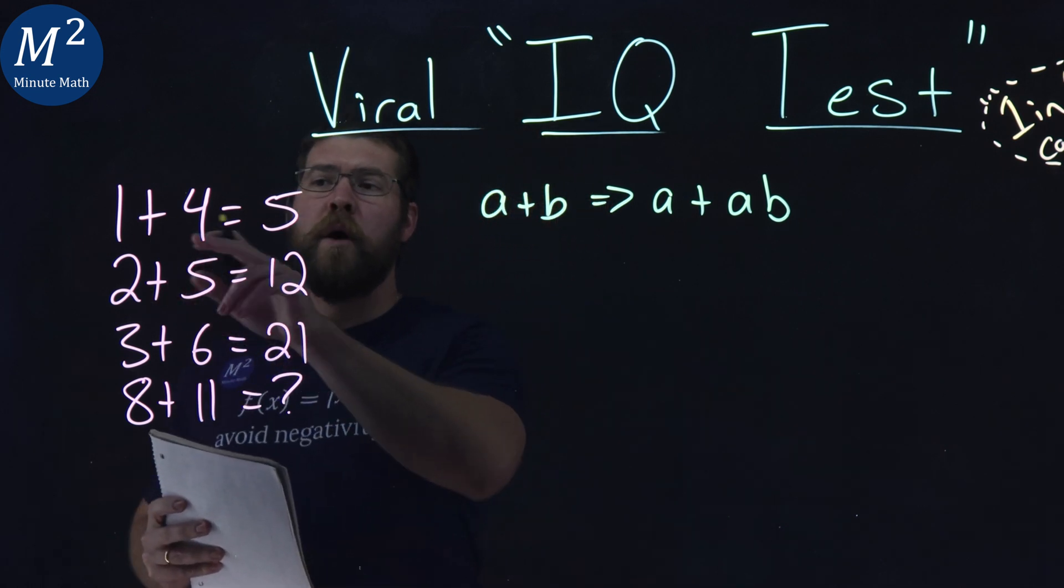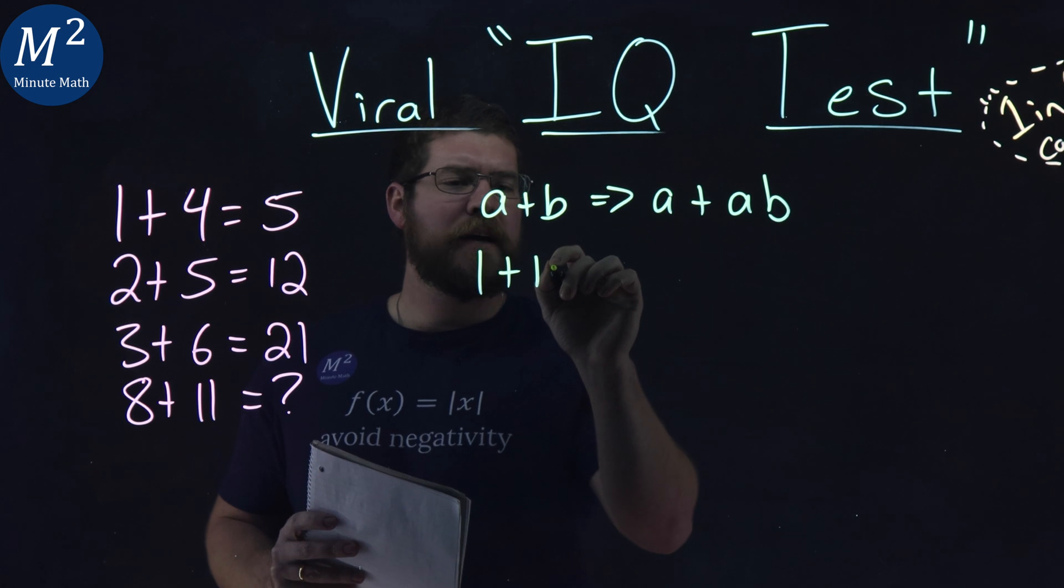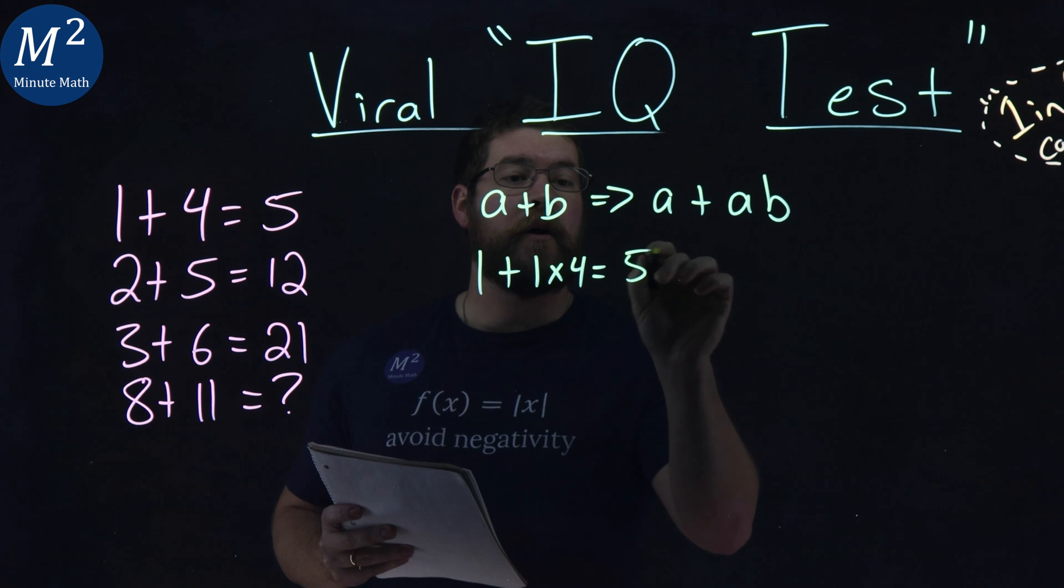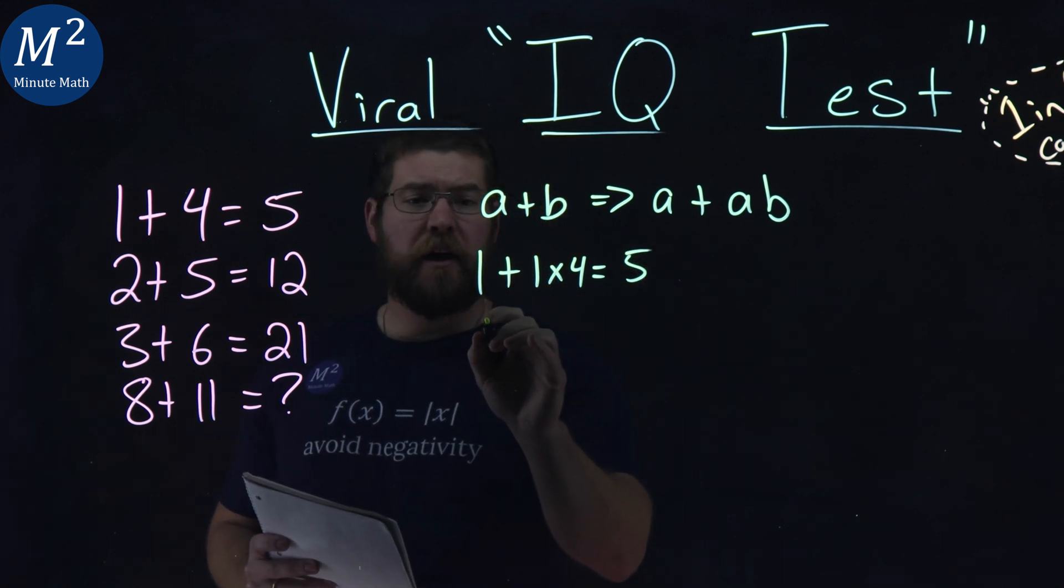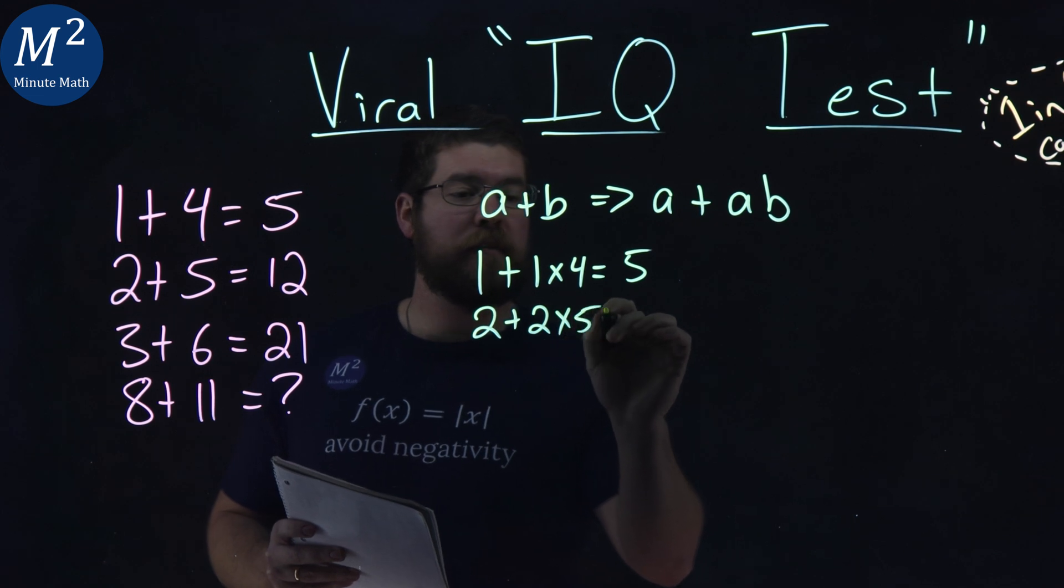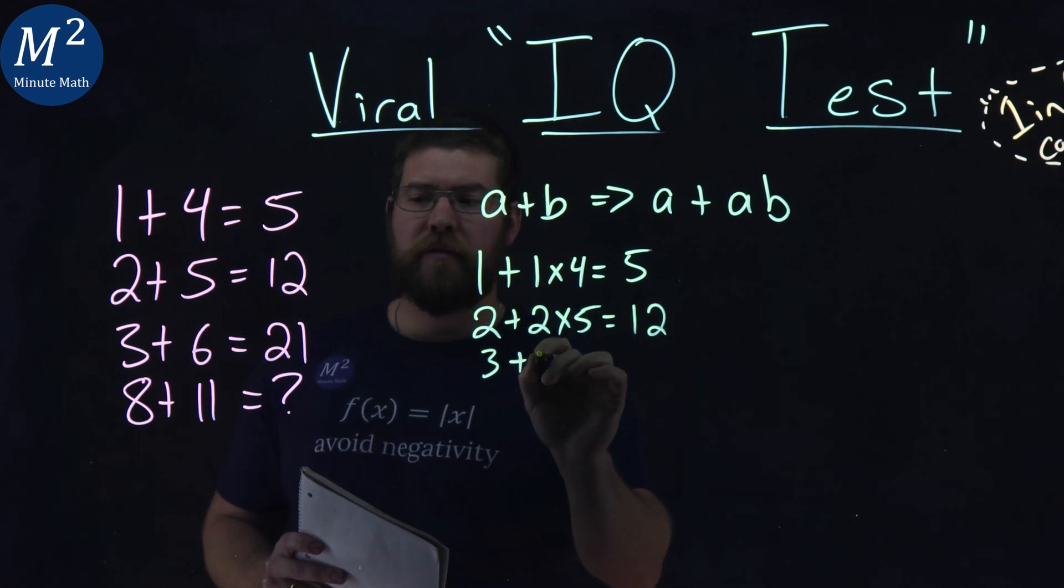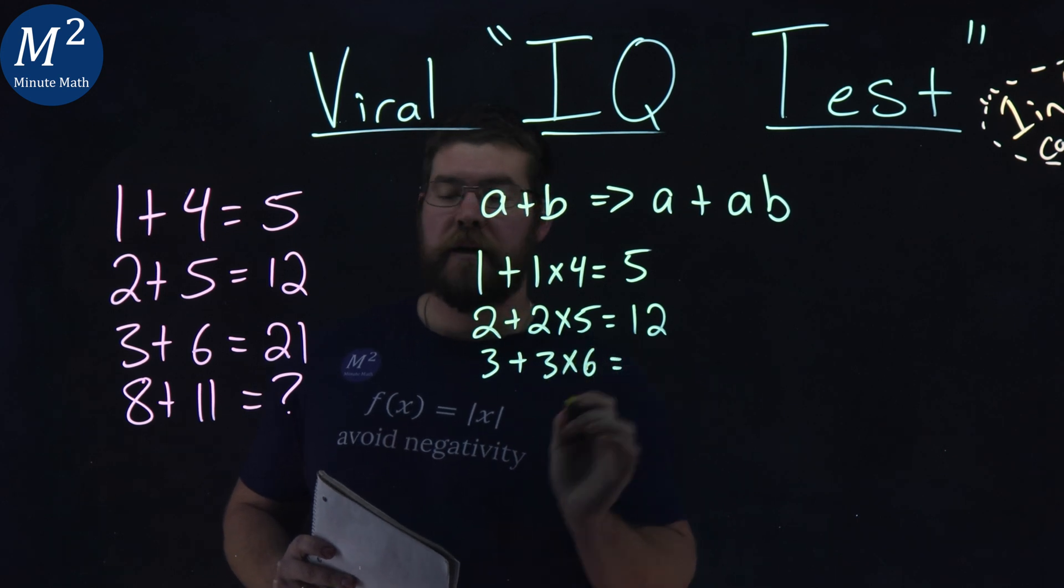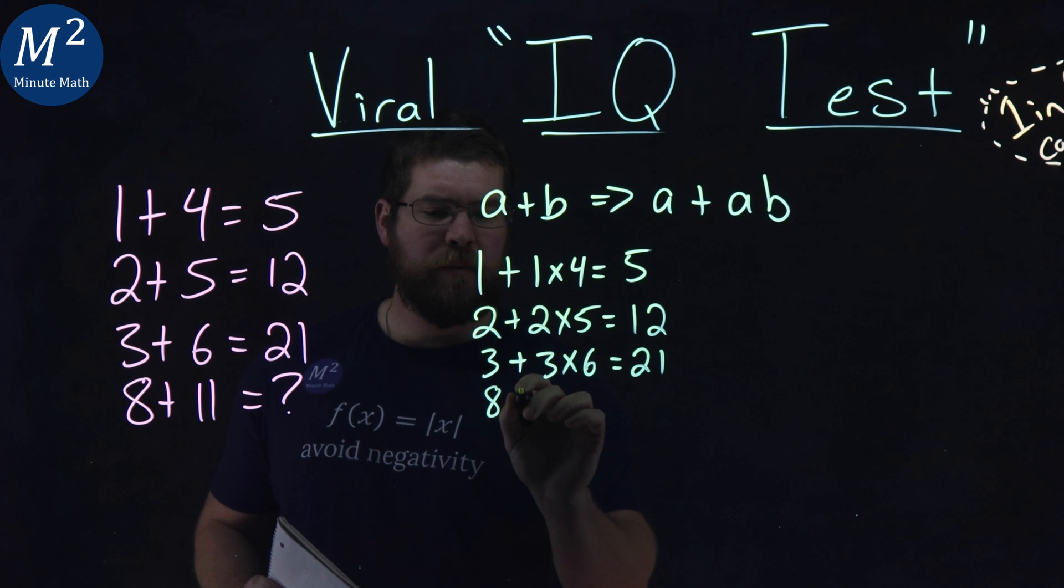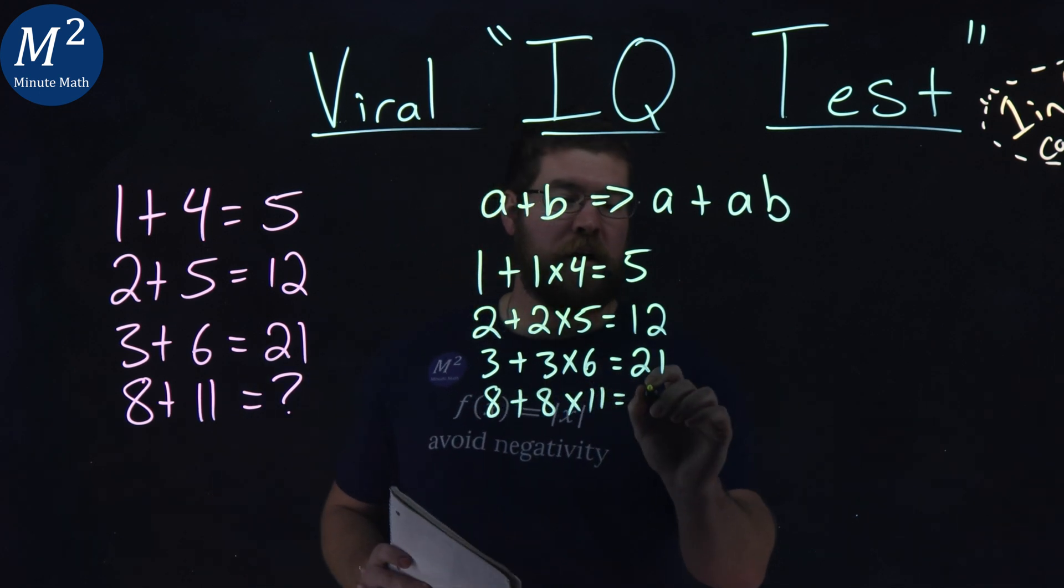So in that case, our 1 plus 4 would be 1 plus 1 times 4, and 1 plus 1 times 4 is equal to 5. Continuing down, that would be then 2 plus 2 times 5 for the next one equals 12, and 3 plus 3 times 6 equals 21. And then lastly, 8 plus 8 times 11 would give us an answer of 96.